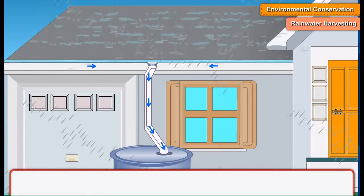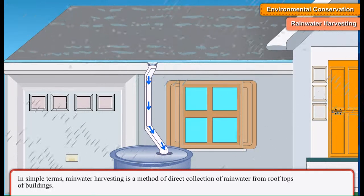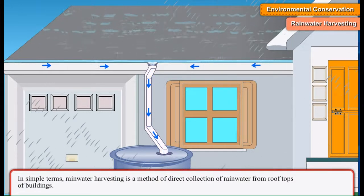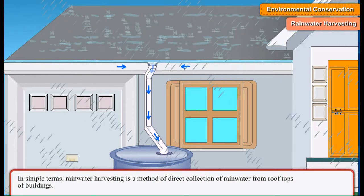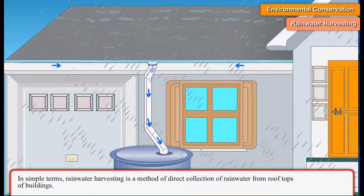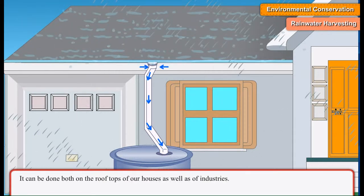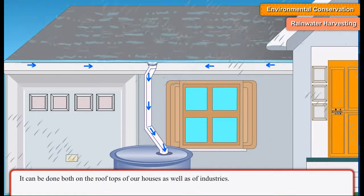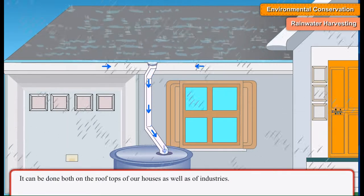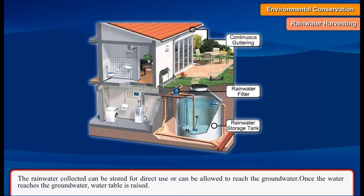Rainwater harvesting: In simple terms, rainwater harvesting is a method of direct collection of rainwater from rooftops of buildings. It can be done both on the rooftops of our houses as well as of industries. The rainwater collected can be stored for direct use or can be allowed to reach the groundwater. Once the water reaches the groundwater, the water table is raised.